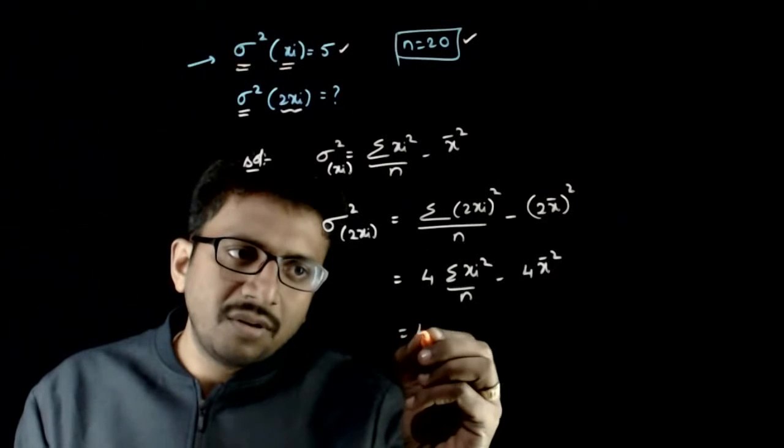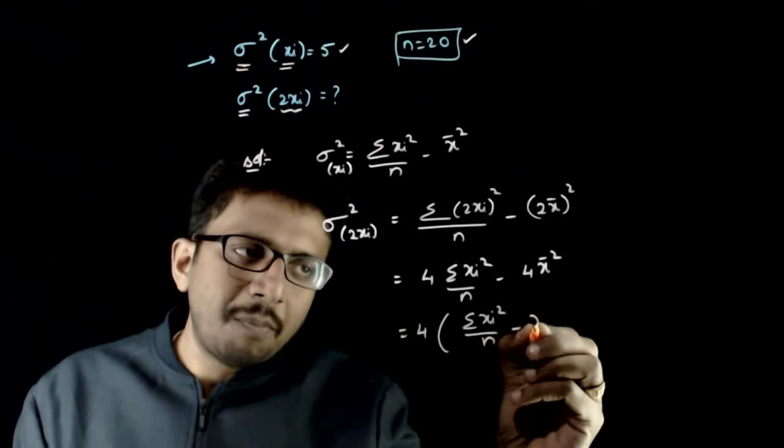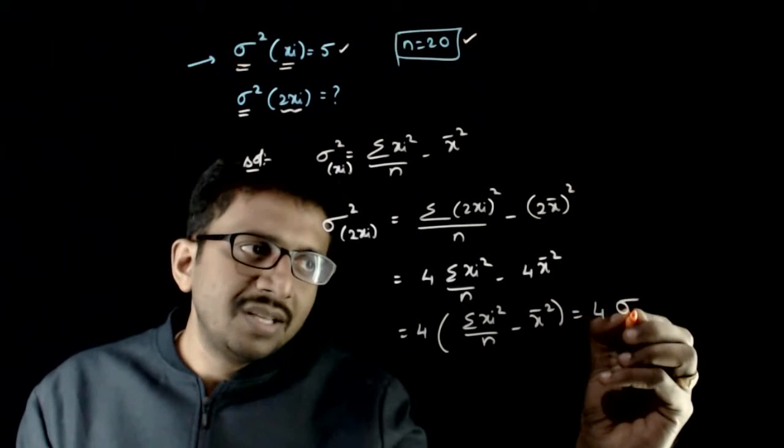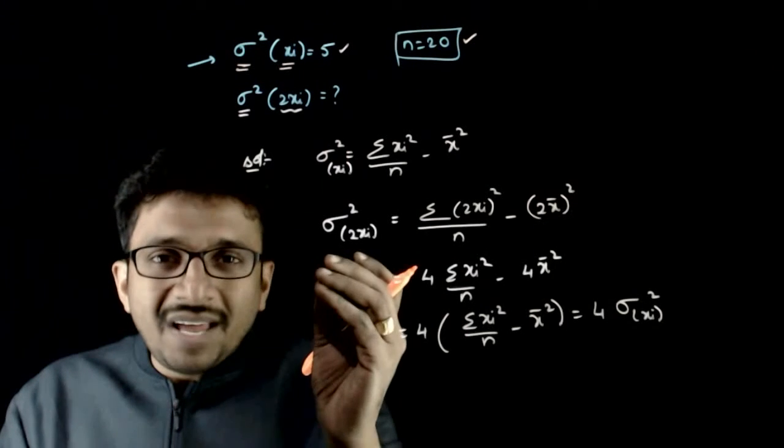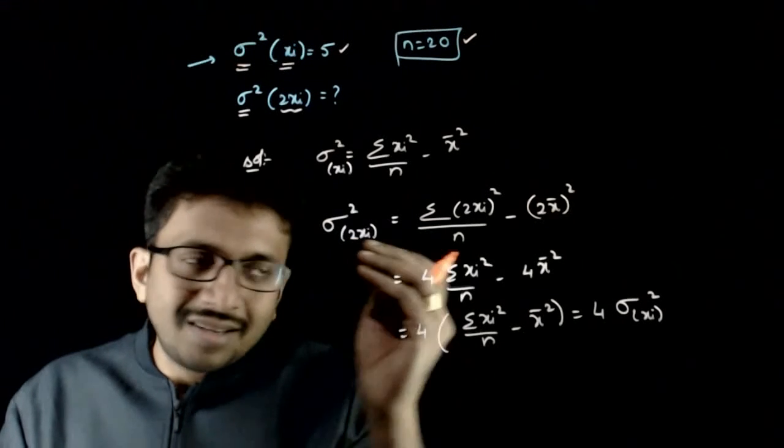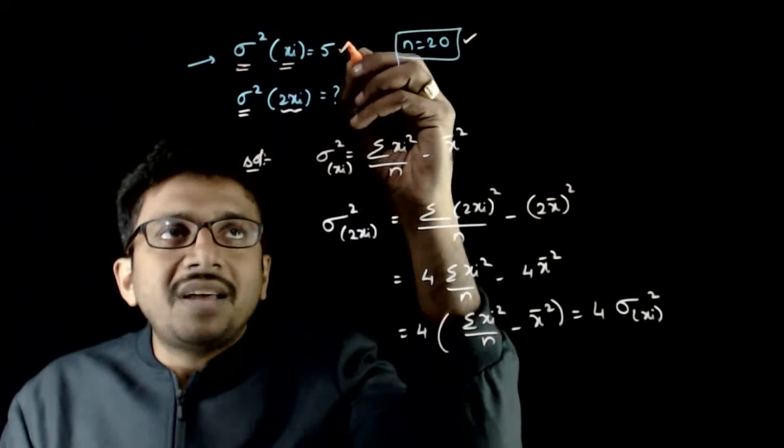If 4 comes out, 4 times sigma xi square by n minus x bar square. That is equal to 4 times sigma of xi whole square. That means the variance of 2xi's is 4 times the variance of xi's. And the variance of xi is given as 5.